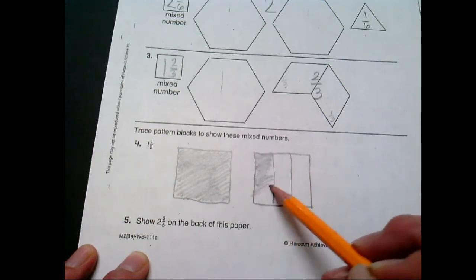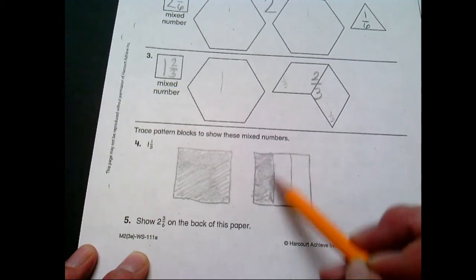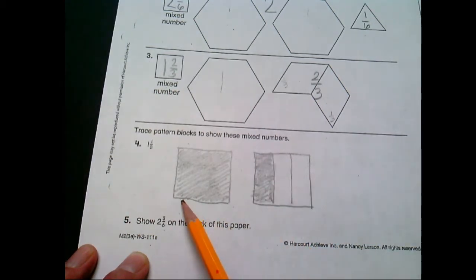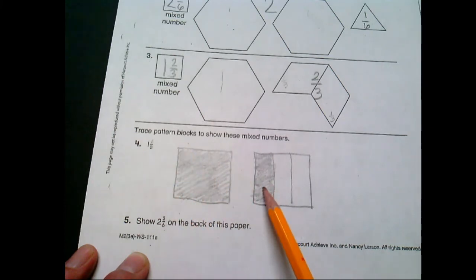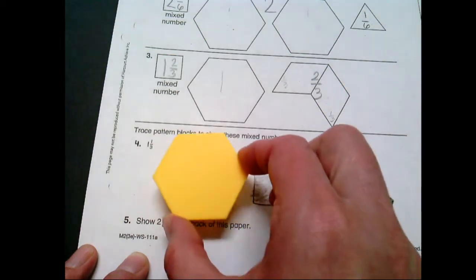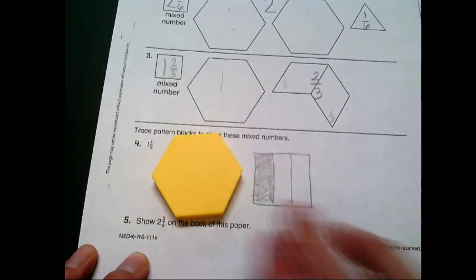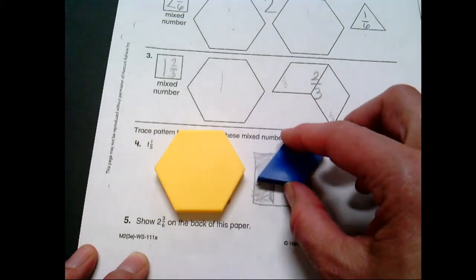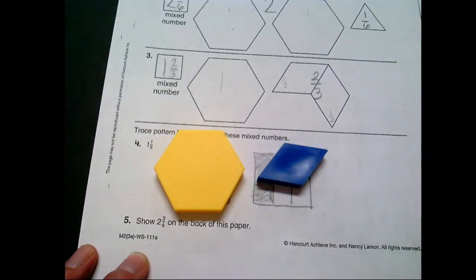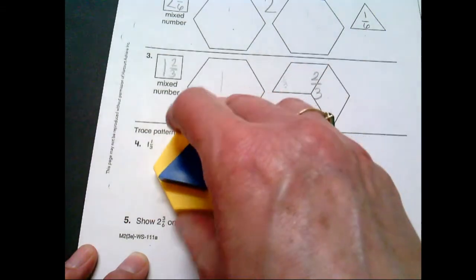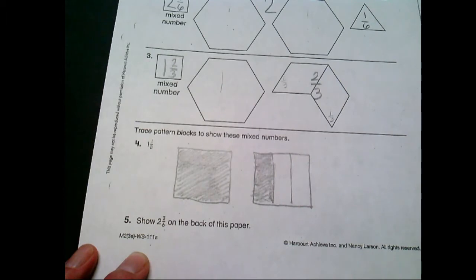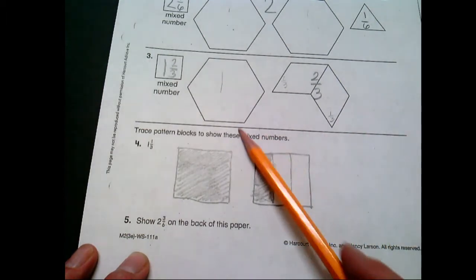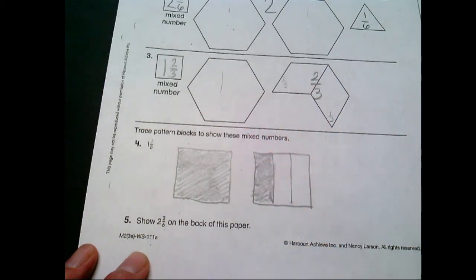That shows one and one third. All right, you take time to draw that one and one third. If we are going to show it with our pattern block shapes, we would trace one hexagon and one parallelogram. That would show one and one third, okay? But it's okay to use different shapes since we don't have those at home to do. Again, if you want to draw like that, I'm okay with that too.